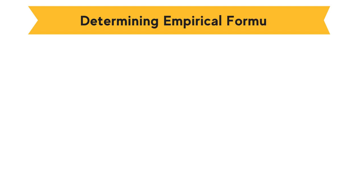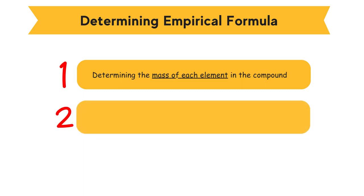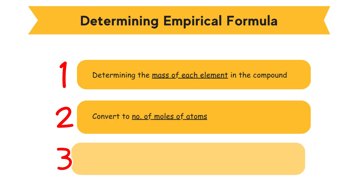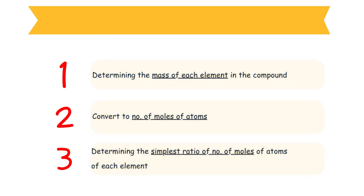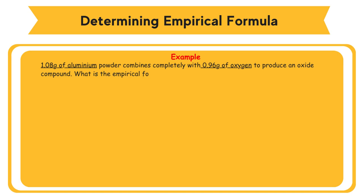Determining Empirical Formula — steps in determining the empirical formula of a compound: first, determine the mass of each element in the compound; second, convert the mass of each element into the number of moles of atoms; third, determine the simplest ratio of number of moles of atoms of each element. Example: 1.08 grams of aluminium powder combines completely with 0.96 grams of oxygen to produce an oxide compound. What is the empirical formula of the oxide? Relative atomic mass: O = 16, Al = 27.